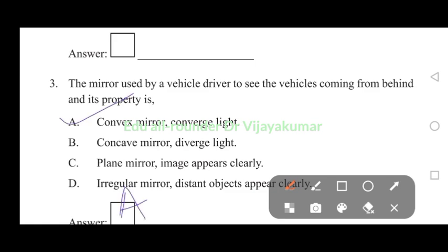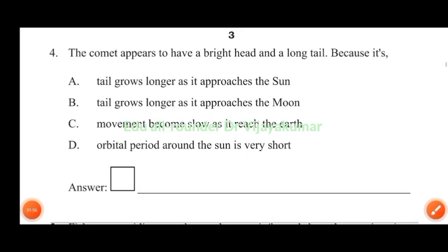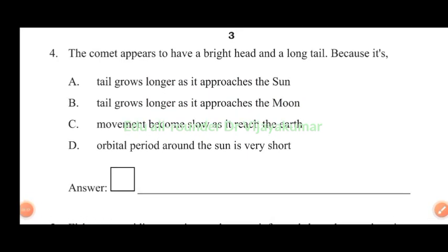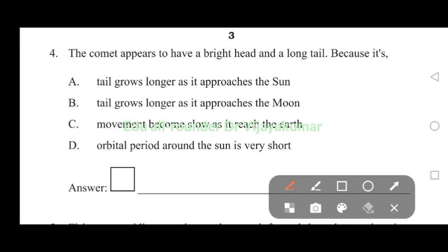The comet appears to have a bright head and a long tail because its tail grows longer as it approaches the sun. This is the right answer. Answer A, option A is the right answer. Tail grows longer as it approaches the sun.